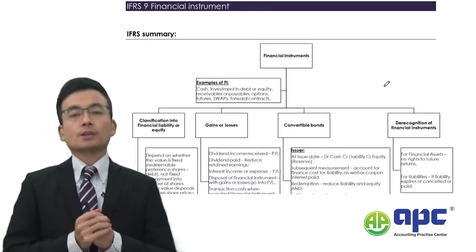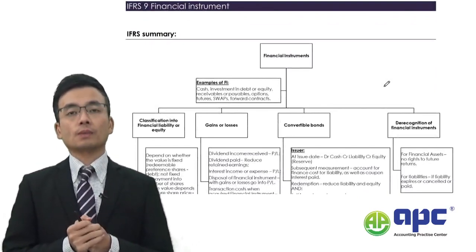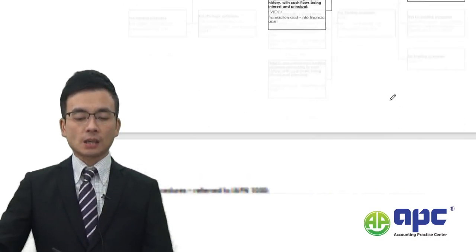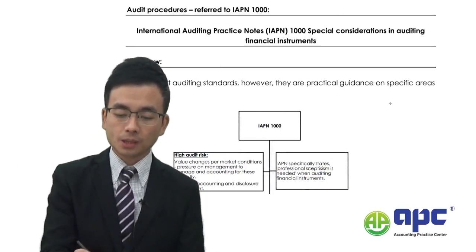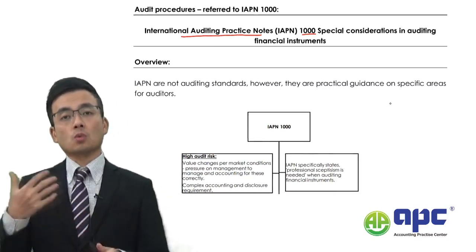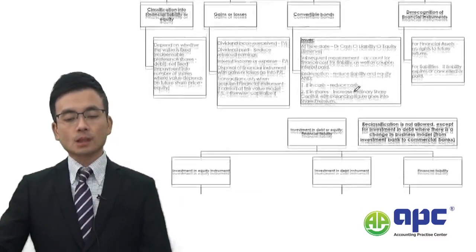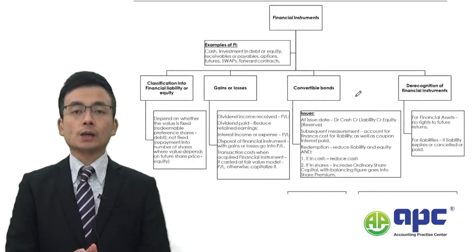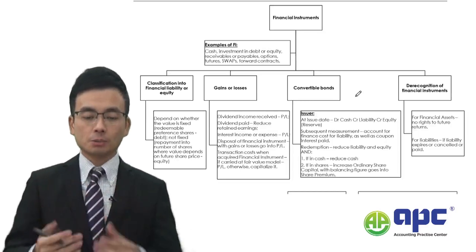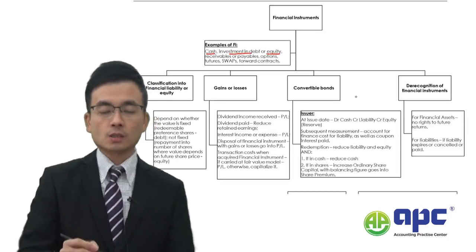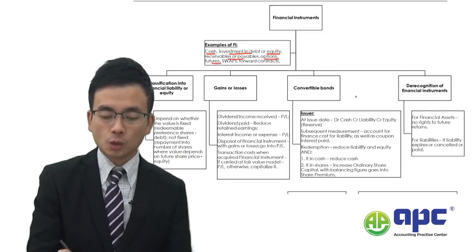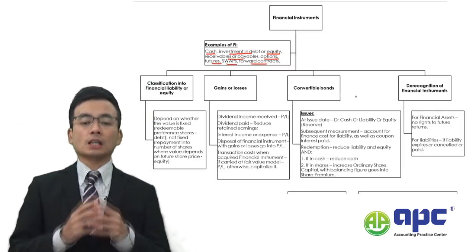The next area is IFRS 9 Financial Instruments — a very tough and complicated accounting standard with a separate IAPN 1000 (International Auditing Practice Note) for special considerations related to financial instruments. A financial instrument is a contract that can be converted into monetary form. Examples include cash, investment in debt or equity, receivables, payables, options, futures, swaps, and forward contracts — the last group being derivatives.